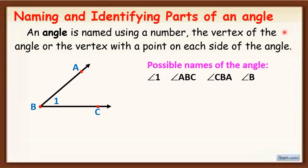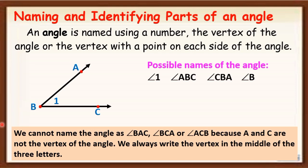Or we can call this angle as angle ABC, or angle CBA, or we can call it as angle B. We can name an angle using a number — that's why we have angle one. Or we can use the vertex with a point on each side of the angle — that's why we have angle ABC or angle CBA, going from one point on the side, then the vertex, then the other point on the side. Or we can name the angle using the vertex, which in this angle is vertex B — that's why we call this angle as angle B. But we cannot name the angle as angle BAC, angle BCA, or angle ACB, because A and C are not the vertex. We always write the vertex in the middle of the letters.